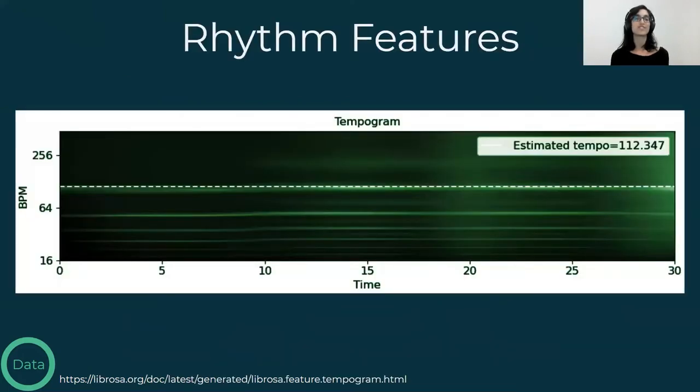Rhythm features include the estimated tempo, which is the speed of the song. That can be extracted from a tempogram. On the y-axis, we have the BPM, beats per minute, which is the way we measure tempo. The x-axis is the time. Here we can see how the tempi, which is the plural of tempo, changes over time.